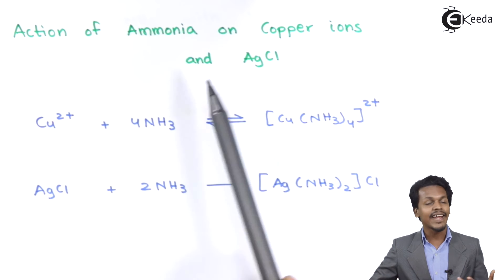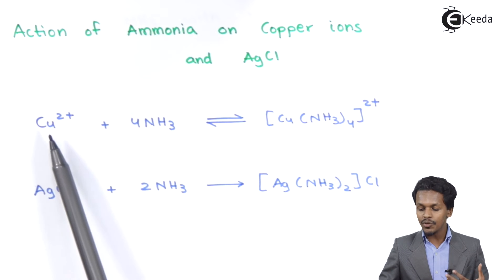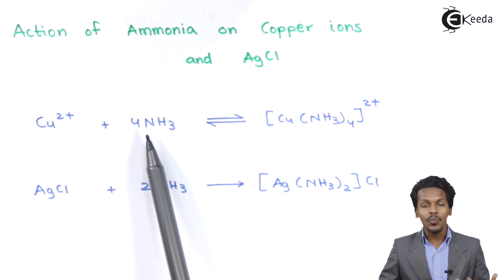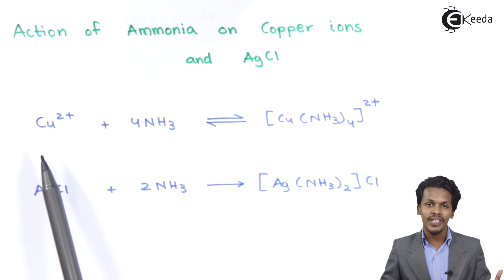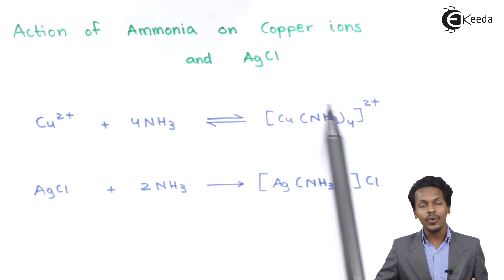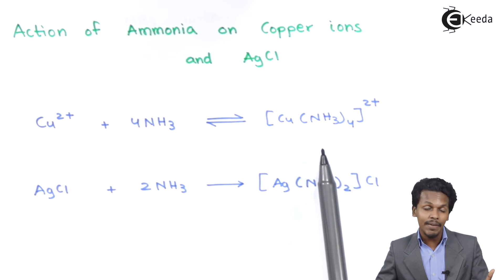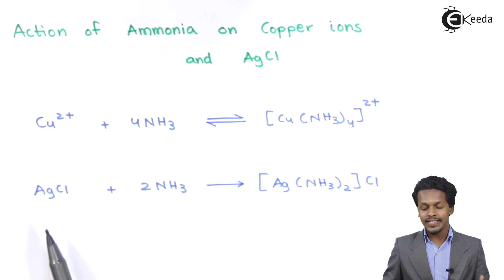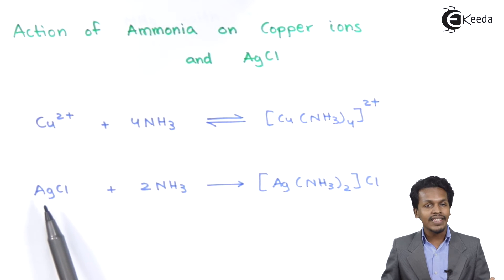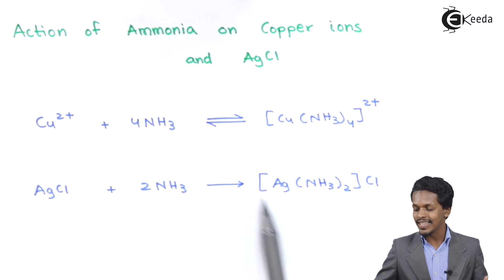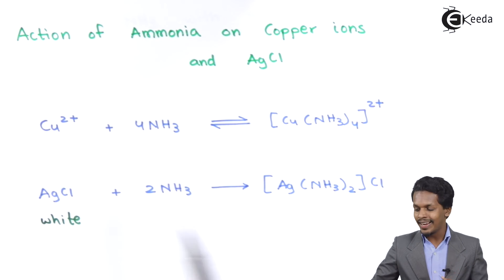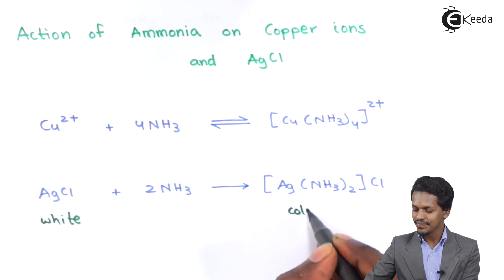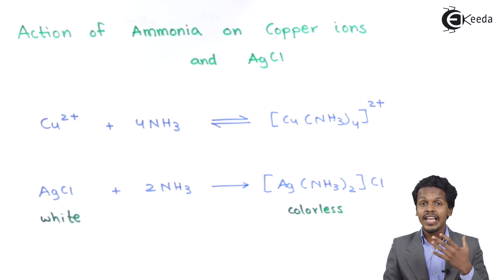Now let's understand the action of ammonia on copper ions and AgCl. When Cu²⁺ ions — for example from CuSO₄, which is blue — react with 4 moles of NH₃, a complex is formed that is deep blue in color. In the second reaction, when NH₃ is treated with AgCl, a complex Ag(NH₃)₂Cl is formed. The AgCl is white, but after reacting with ammonia it forms a colorless complex, allowing us to detect whether the reaction has occurred.